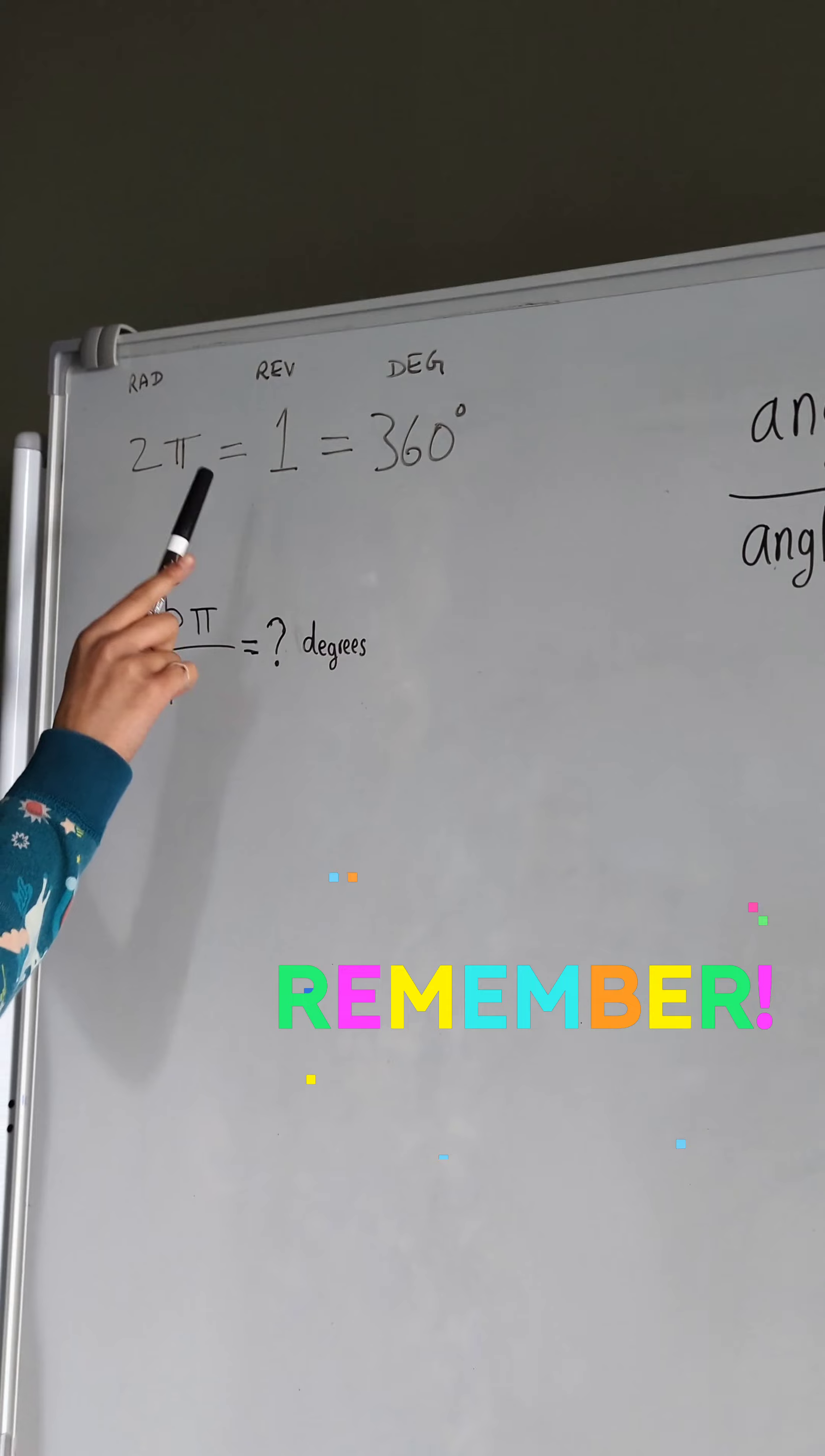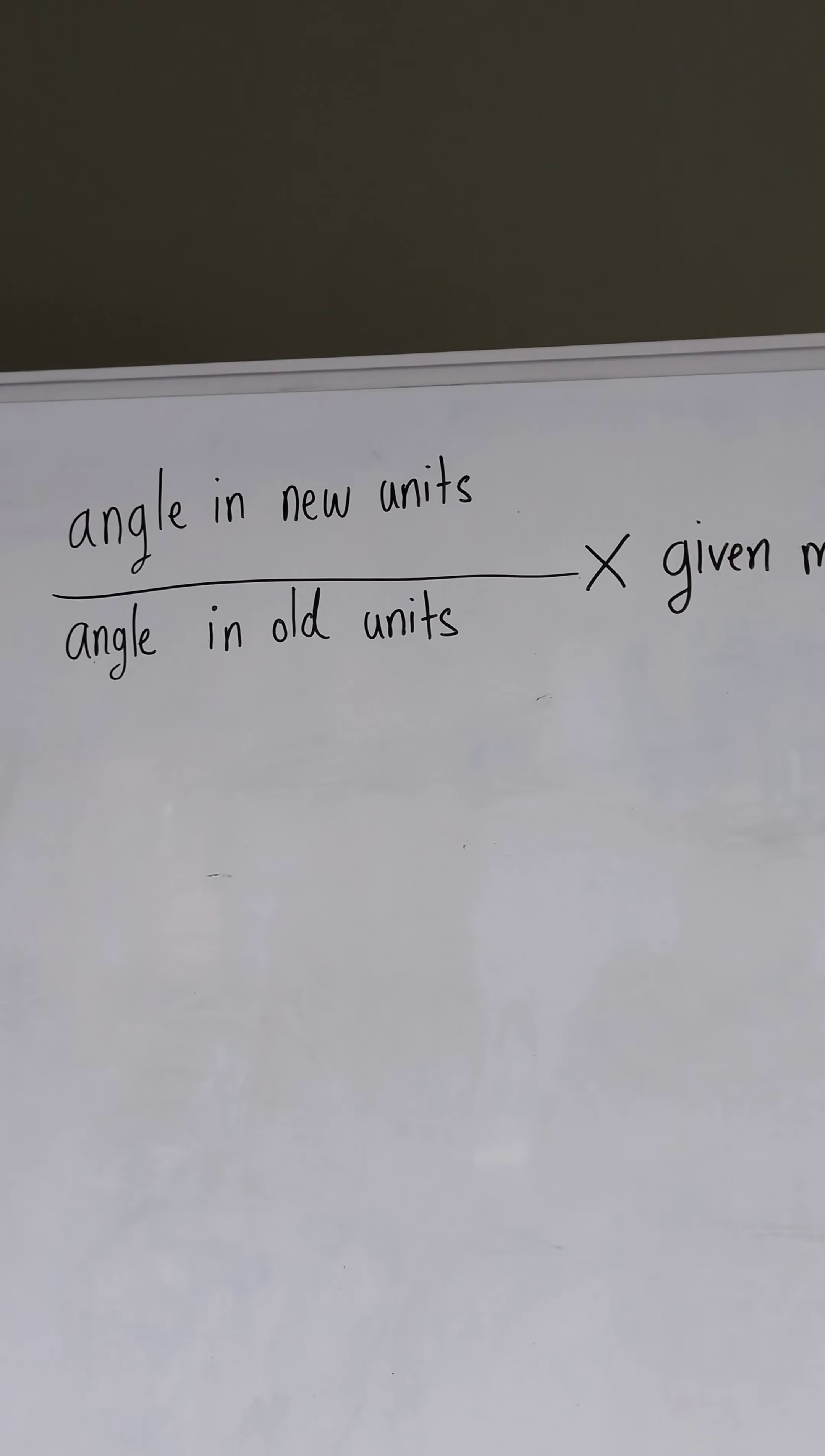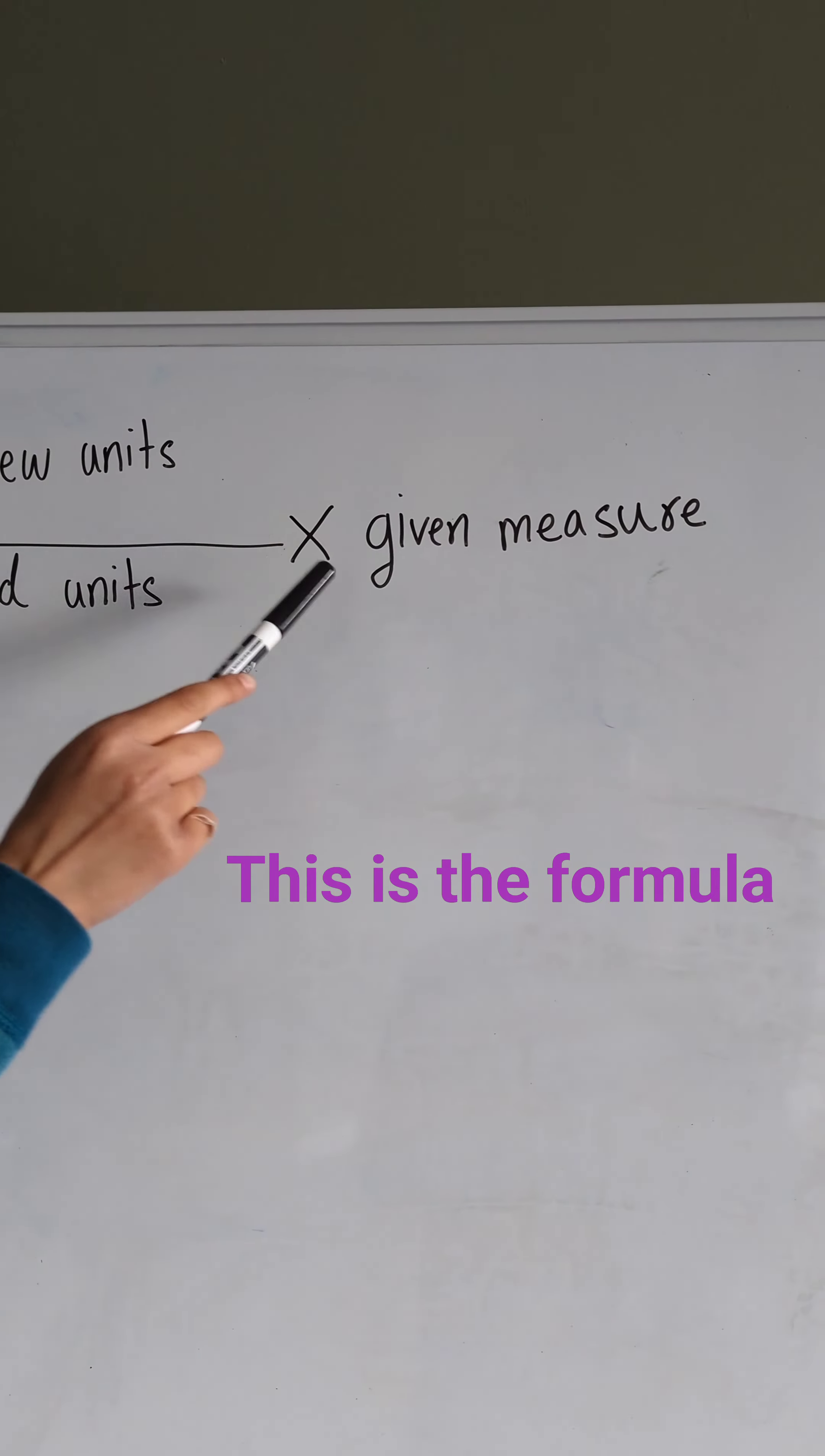That equation is going to help us a lot later when we're actually doing the problem. The formula that we're going to use to convert radians into degrees is angle in new units divided by angle in old units times given measure.